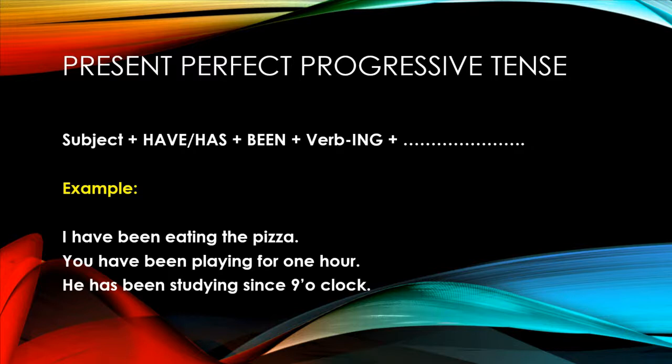To make the present perfect continuous tense or present perfect progressive tense, you need a structure. The structure is given below as you can see on the screen. First of all, we will add a subject, and based on subject we will add have or has, and then we will add been here. Been is the past participle form of be. Then we will add verb in the base form and add -ing with the verb, and rest of the sentence.